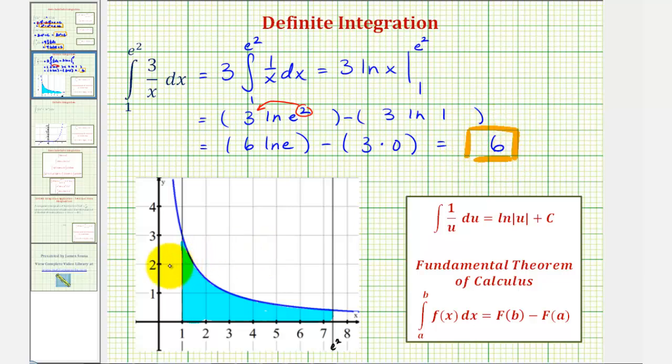So the area bounded by this function over the closed interval from one to e squared, shaded here, is exactly six square units. I hope you found this helpful.